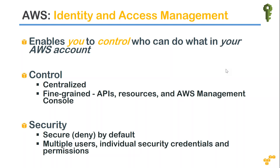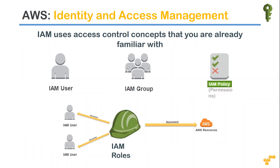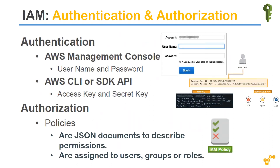IAM broadly uses very familiar concepts — especially for people already doing IT — such as users, groups, and permissions. It takes those three core concepts and combines them in different ways to provide access to resources. When talking about users, it is the individual people who need access. Amazon resources can be accessed using the AWS Management Console, which is the GUI we are all familiar with.